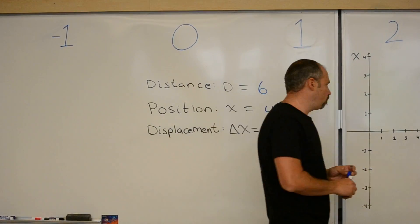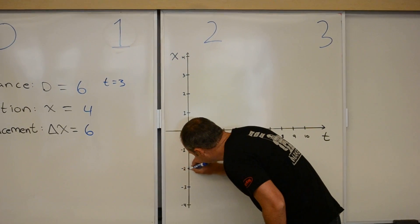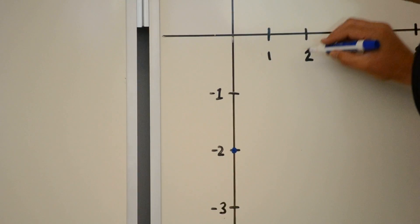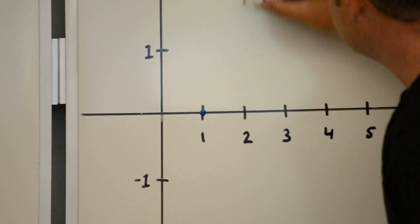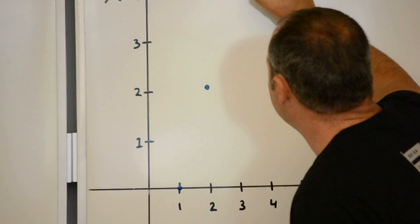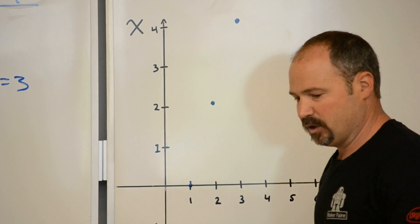And, if we go to our graph, we can now graph some points. I started here. After 1 second, I was up at 0. After 2 seconds, we were here at 2. And, after 3 seconds, we were here at 4.